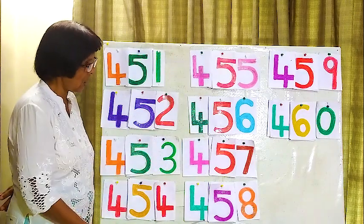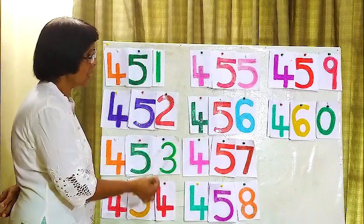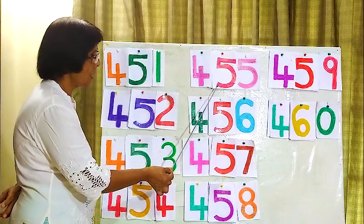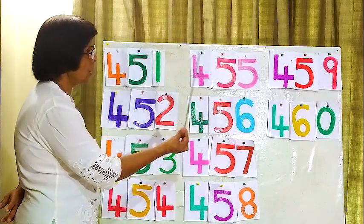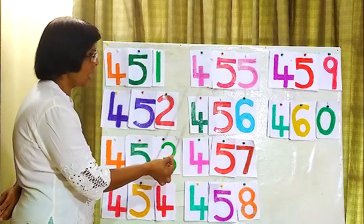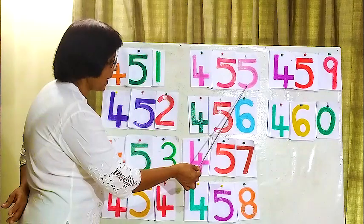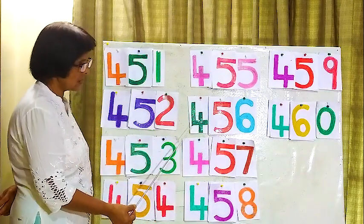Right, we will read this side now. Here 455. 455. How do you read 455? 455, 455. 455, 455.